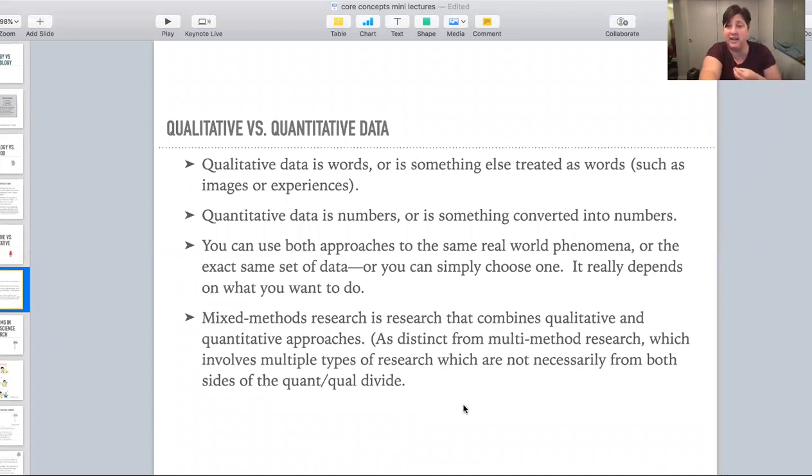Qualitative data is data that exists as words. If it's not naturally words, it can be converted into words. So for instance, you can say that this cat, she's not a word, but you could use words to describe her. Gray, fluffy, insistent, many words. And so therefore, that sort of information about this cat is qualitative data.